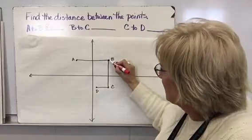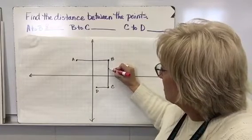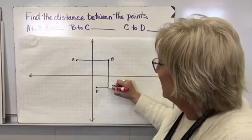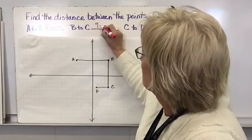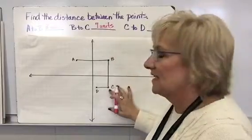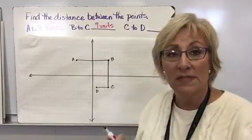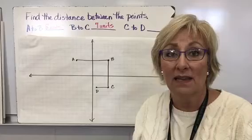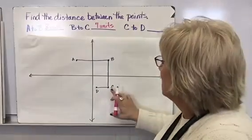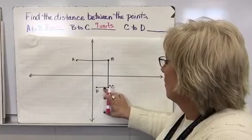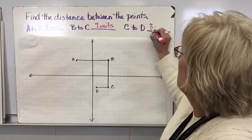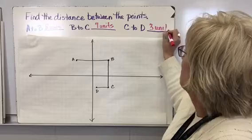Now I'm going to go from B to C. I go down one, two, three, four, five, six, seven — that's seven units. Notice I was going down, which is normally a negative direction, but remember: distance is never negative, so I just went seven units down. For C to D, I go over one, two, three — so that's three units from C to D.